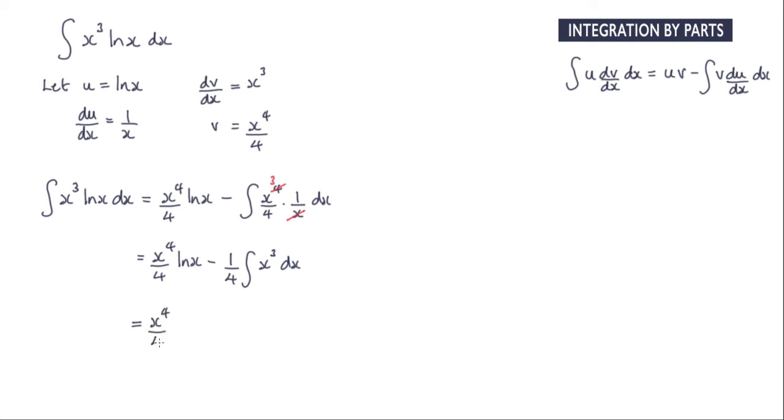So we've got x to the power of 4 over 4 log x minus. x to the power of 3 integrated will give me x to the power of 4 over 4, and we've got a quarter here. So the 1 quarter and the 4 from the integral will give me 1 over 16, x to the power of 4 plus c.